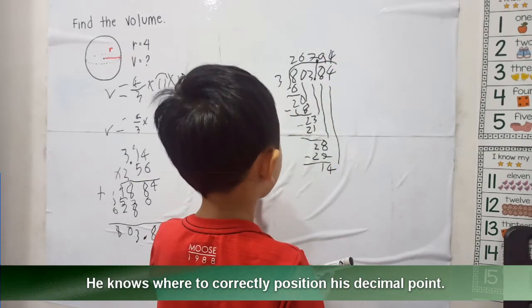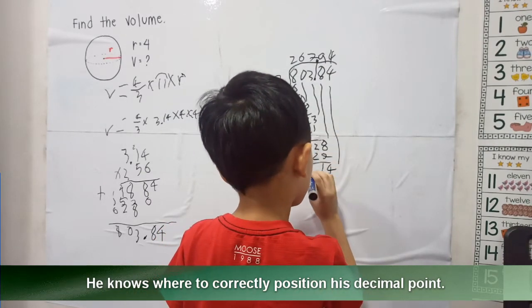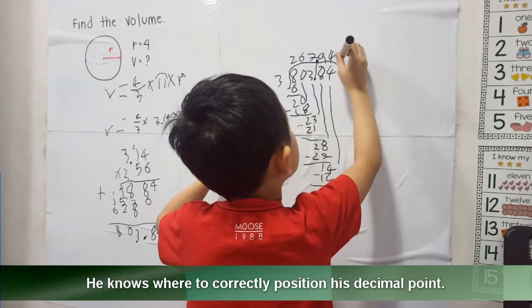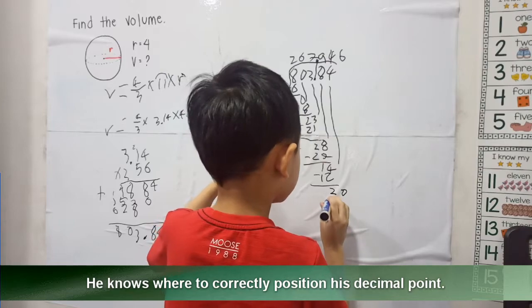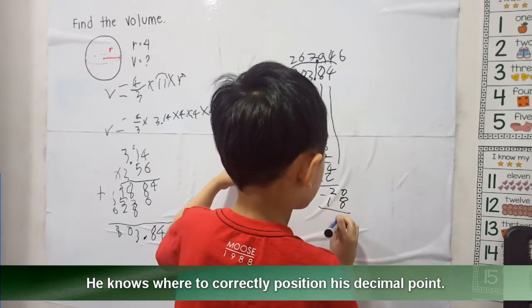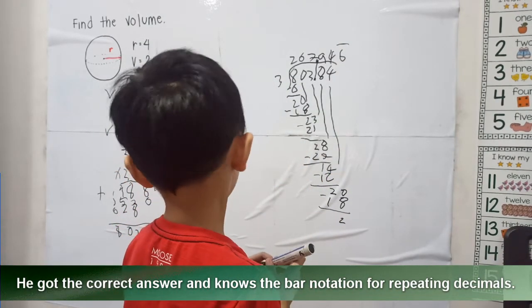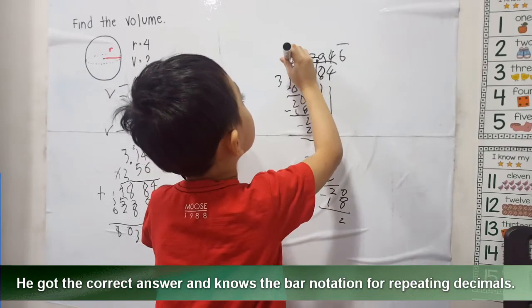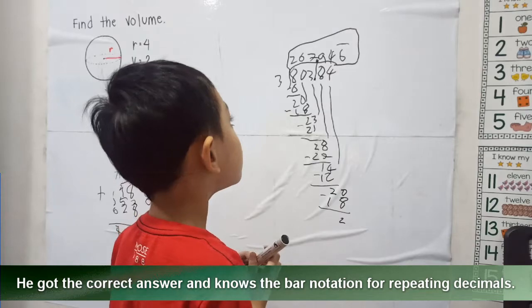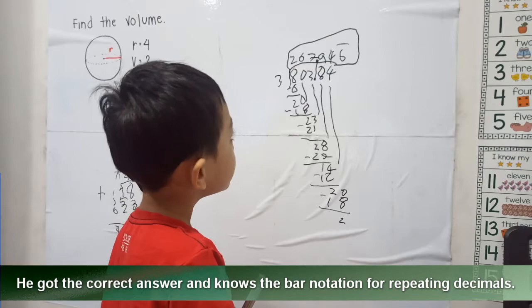9 times 4. We've done 4, 5, and minus is 3. And minus is 2. 2 times 3 is 6, and minus is 2. 6 times 3 is 18. And minus is 2. Wow. What is this? What's the answer? 267.946.